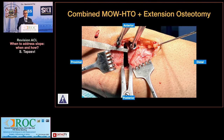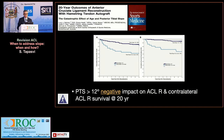When performing a concomitant high tibial osteotomy to decrease slope, use a small compressor device from the foot and ankle set with two pins on the anterior side of the osteotomy, compress anteriorly, and open the exact amount of hinge posteriorly to achieve combined coronal and sagittal plane correction.